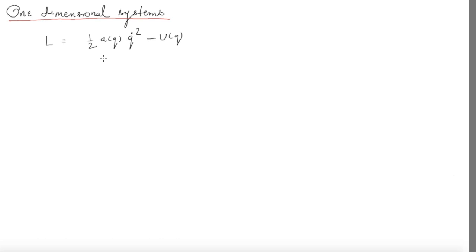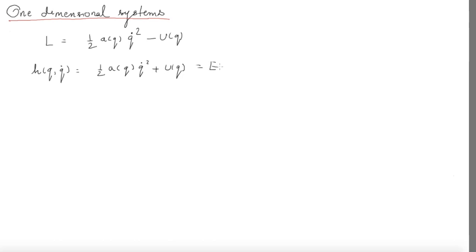The energy function or Hamiltonian function will be a conserved quantity. You can immediately obtain h(q, q-dot), which turns out to be A(q) times q-dot squared plus U(q). For the system, this will be constant throughout the motion and will be some number E which we call energy.